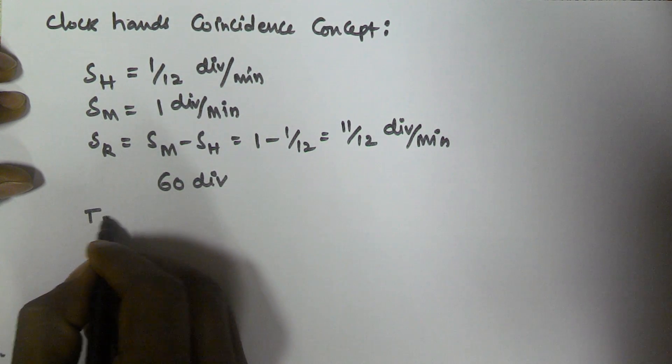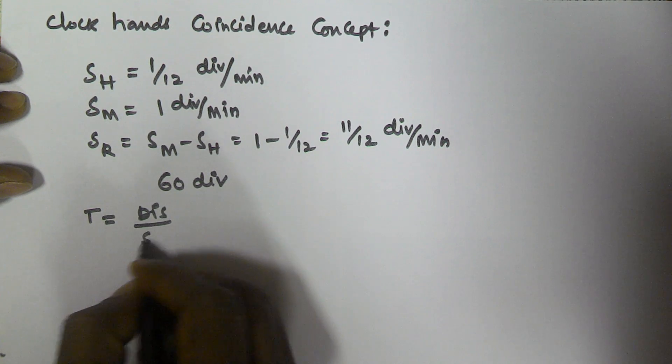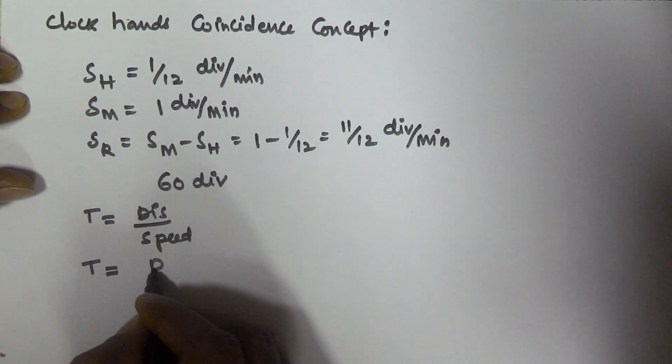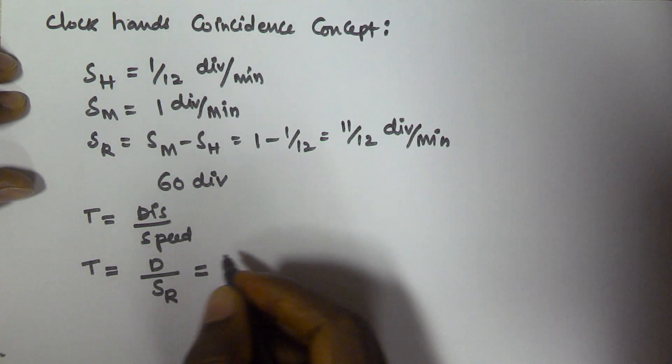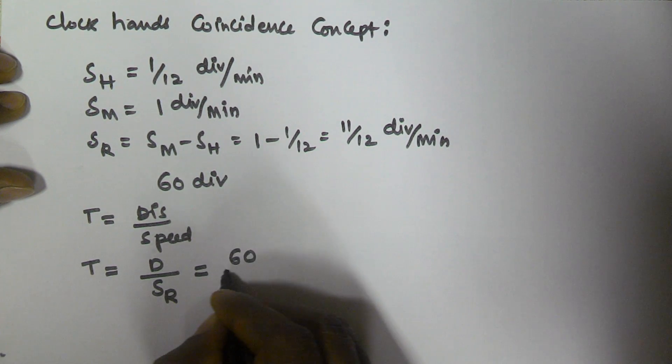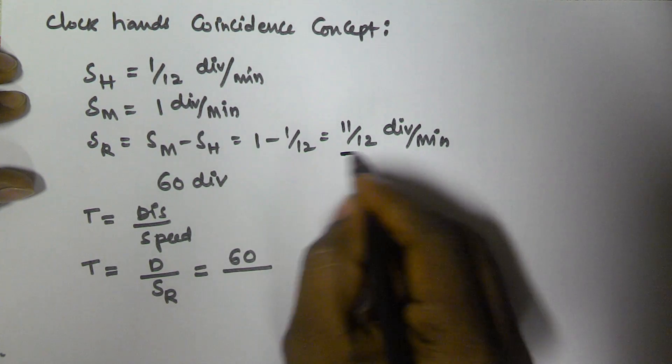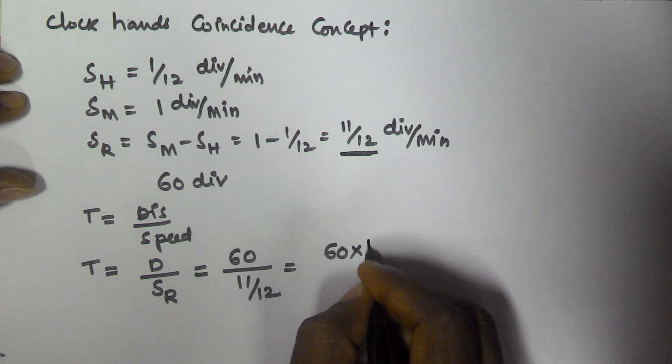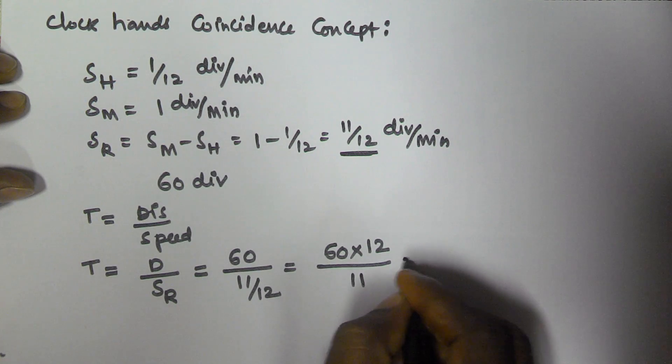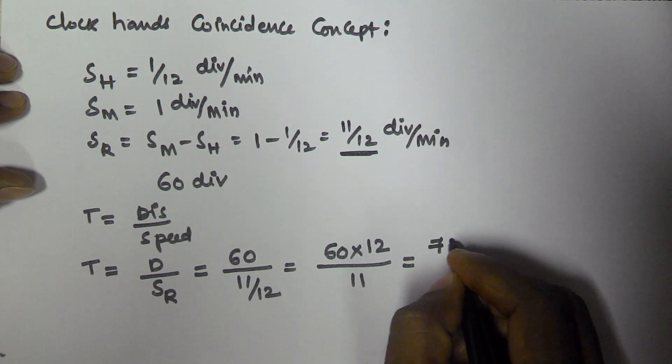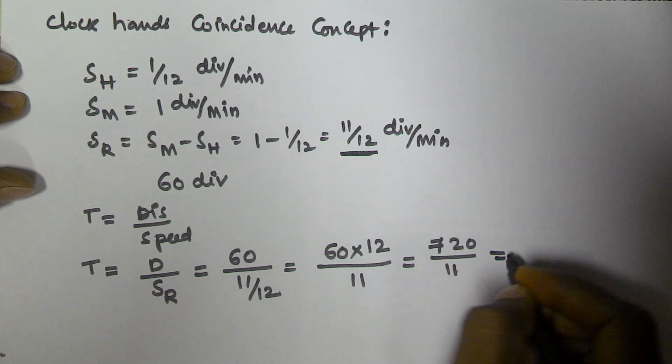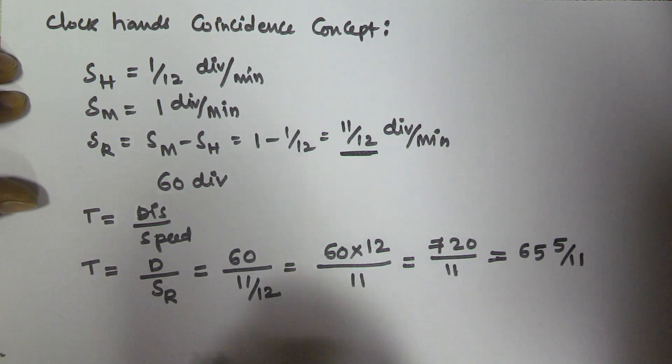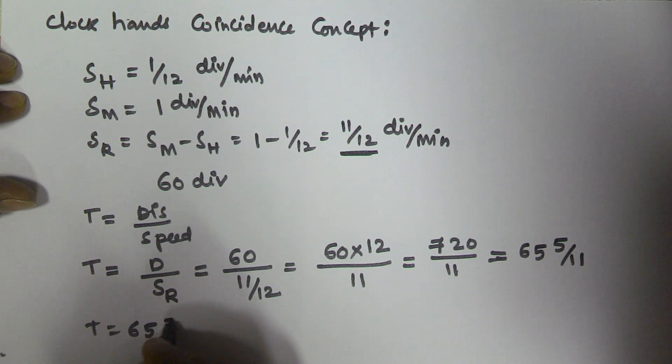So time is equal to distance by speed. So here time is equal to distance by relative speed that is SR. So the total distance we have is 60 divisions by the relative speed we have is 11 by 12. So this is equal to 60 into 12 by 11 is equal to 720 by 11 is equal to 65 and 5 by 11. So time is equal to 65 and 5 by 11.